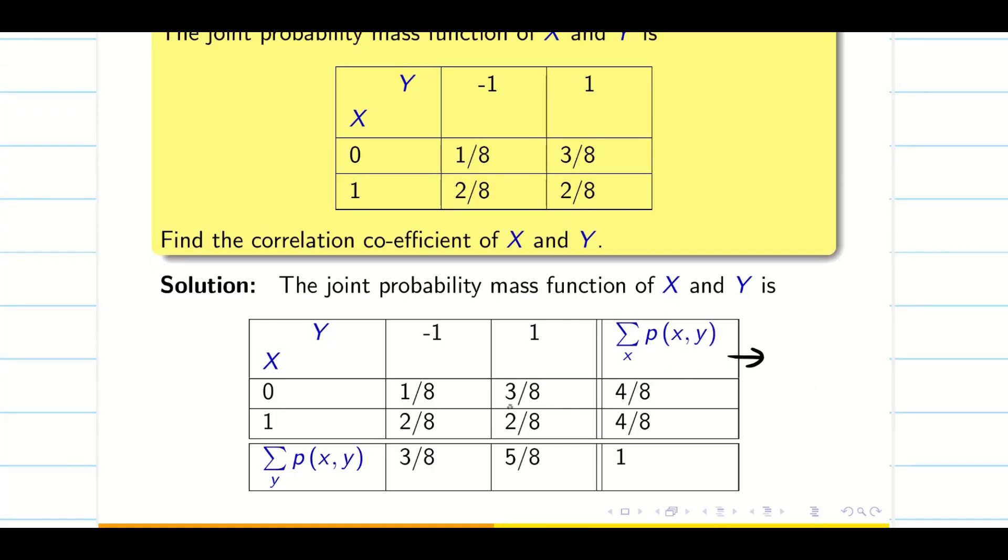Now we found the column sum and the row sum from the given data. Just add all the row sum and it is 4 by 8. Similarly, fill the column sum and now the grand total is always 1 because total probability is 1. Now, we keep all this data in mind. Let us calculate one by one what we need.